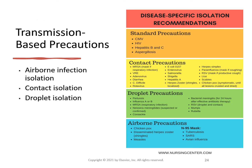Transmission-based precautions go a step further than standard precautions. Contact precautions address any transfer of microorganisms through touch. Droplet precautions involve sneezes or large particles that routinely fall within three feet of the individual. Airborne precautions involve very small particles that float in the air and require a HEPA filter or an N95 mask.